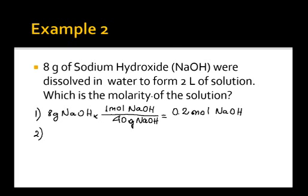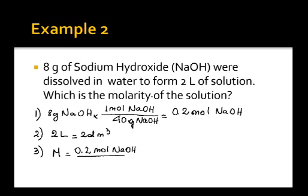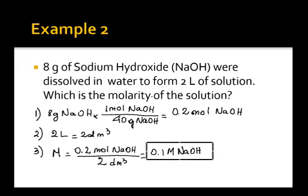The second step is the volume in decimeter cubed. It's already given as 2 liters, so we don't need to do anything because 2 liters is equal to 2 decimeter cubed — they are equivalent. Calculating the molarity gives us 0.2 moles of sodium hydroxide over 2 decimeter cubed, which is 0.1 molar of sodium hydroxide.